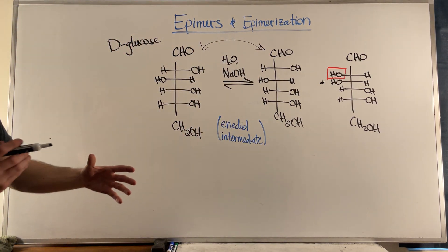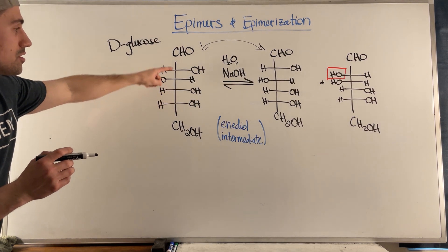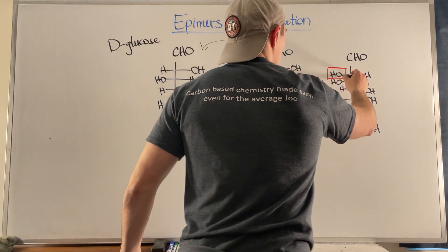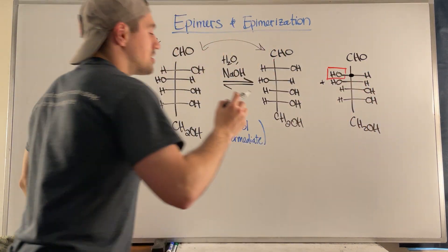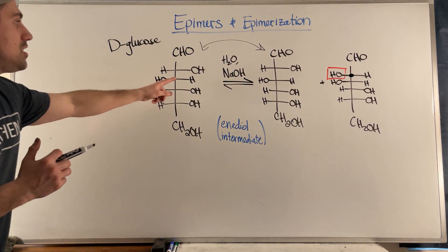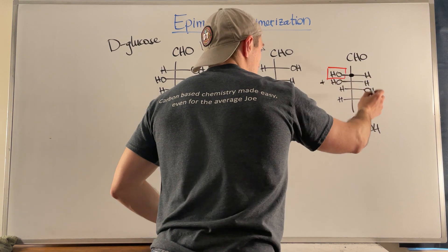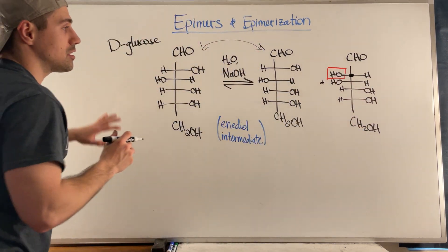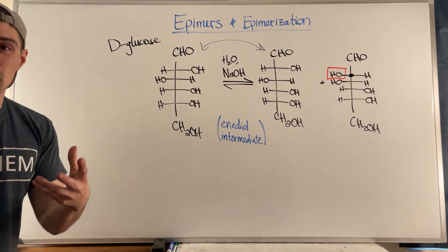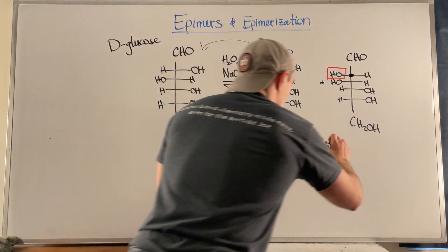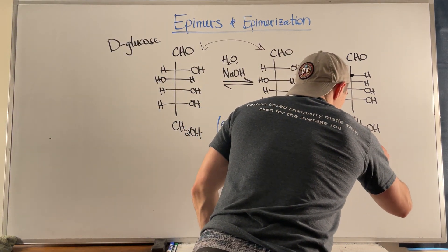But what you can find out happening is one of your stereocenters, and I picked to show it here, that stereocenter can flip. You can see we have right, left, right, right. Now we have left, left, right, right. We actually started with D-glucose, and because of our basic environment, our basic conditions, we ended up with D-mannose.